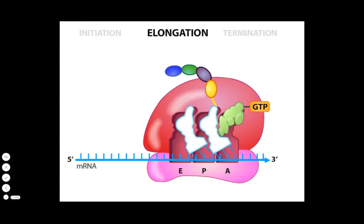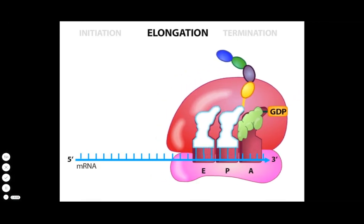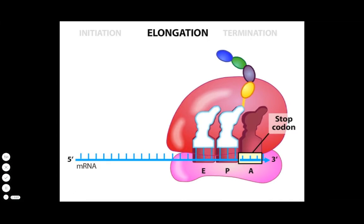Eventually, the ribosome arrives at the end of the coding region marked by one of three stop codons. This stage of translation is called termination. No corresponding tRNAs exist for stop codons. Instead, a protein called a release factor enters.